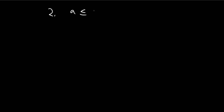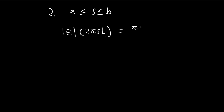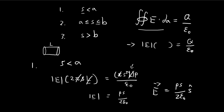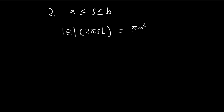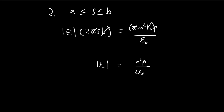For the second case, when s is between a and b, we do the same thing. The left side is 2πsl. The charge enclosed is πa²lρ — notice it's a squared, not s squared — because between a and b there's no additional charge beyond radius a. After canceling, the electric field equals ρa² over 2εs, pointing in the radial direction.